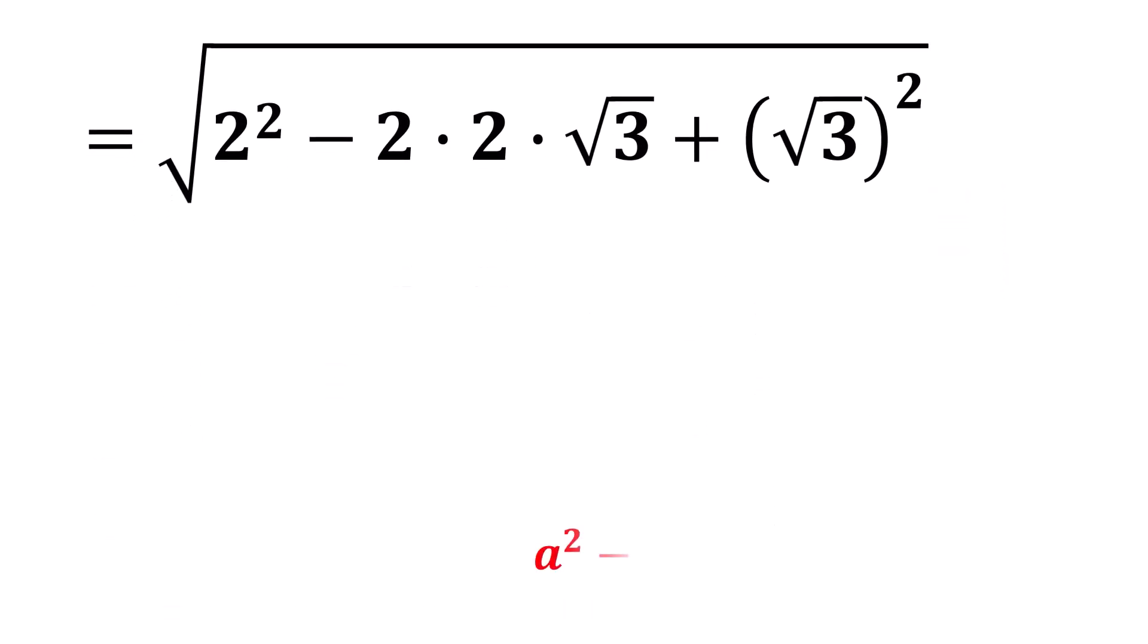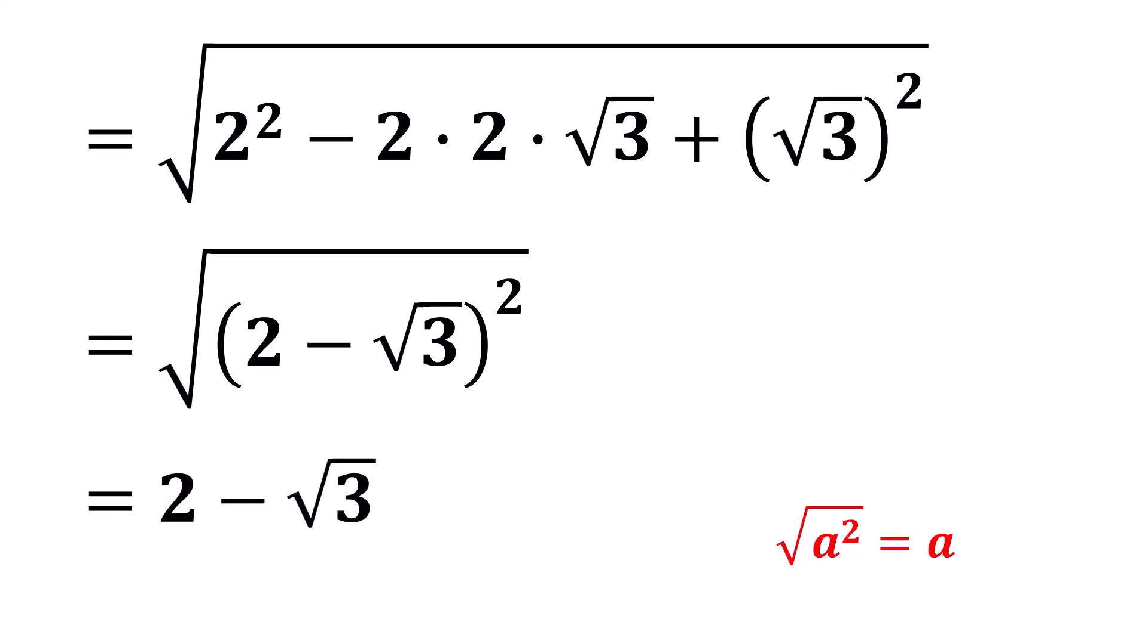Now, applying the algebraic identity, we can rewrite it as the square root of 2 minus the square root of 3, whole squared. Applying the identity, we finally get 2 minus the square root of 3, and that is our solution.